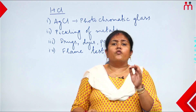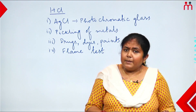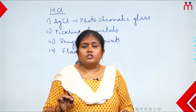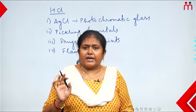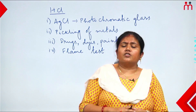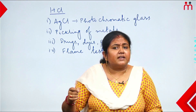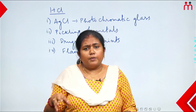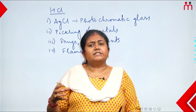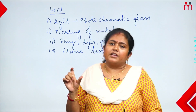In the flame test, we identify which metal is present in a salt. To do the flame test using hydrochloric acid, we use a platinum wire. We dip the platinum wire in concentrated hydrochloric acid, then bring it into the flame to identify the metal in the salt.